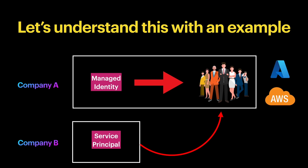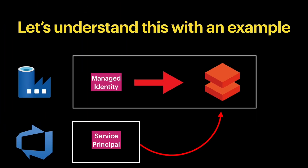Both managed identity and service principal are used for authentication purposes. For example, if you want to give Azure Data Factory access to Azure Databricks, you can do it using managed identity. When you create an Azure Data Factory, an ID is automatically created by Azure called a managed identity, and you can use this ID to directly allocate access to other resources.